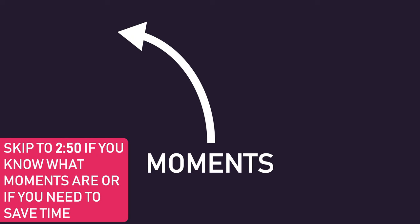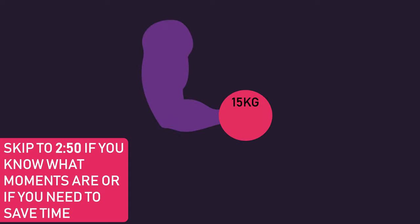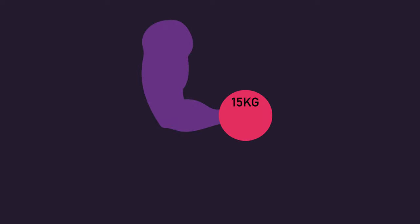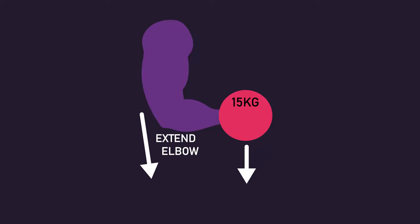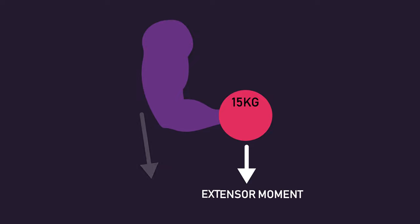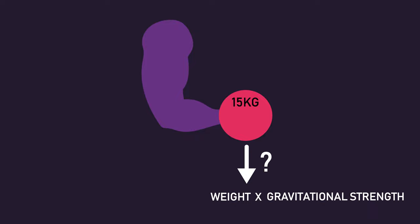Moments are forces that turn something. To understand what external moments are, let's look at a biceps curl. Here we have someone holding a biceps curl at midpoint, with their forearm parallel to the floor. The dumbbell is applying a downward force that is trying to extend your elbow. Therefore, we say the dumbbell is exerting an extensor moment.